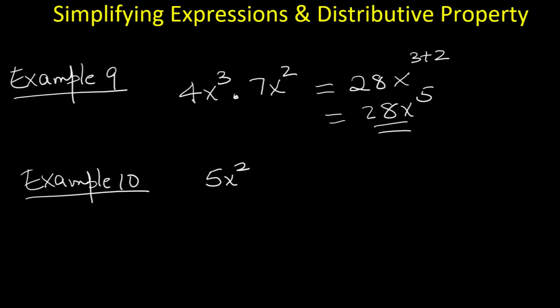Example 10. Now let us multiply 5x squared y cubed times 2x to the fourth y. Multiply the coefficients: 5 times 2 is 10. Add the exponents of x: 2 plus 4 is 6. Add the exponents of y: 3 plus 1 is 4. So the product is 10x to the sixth power y to the fourth power.